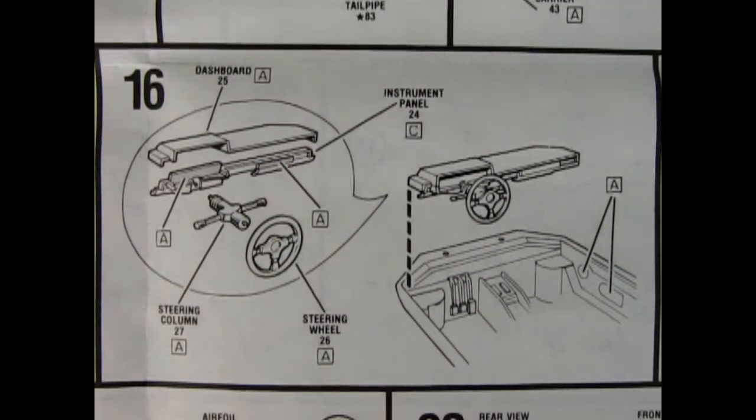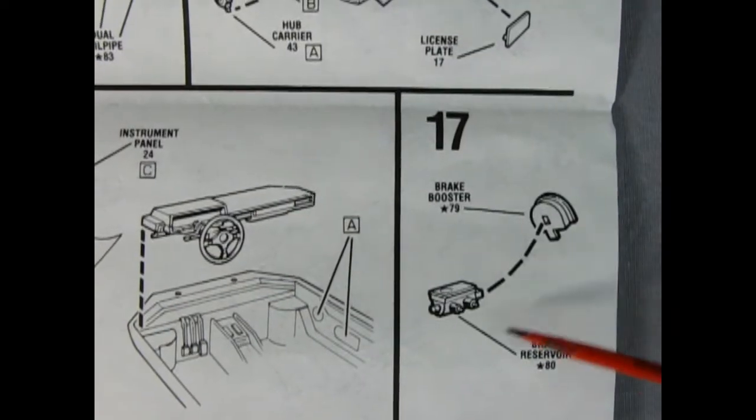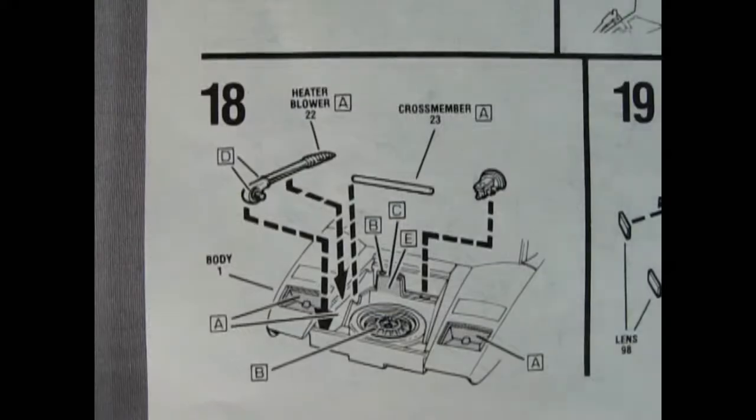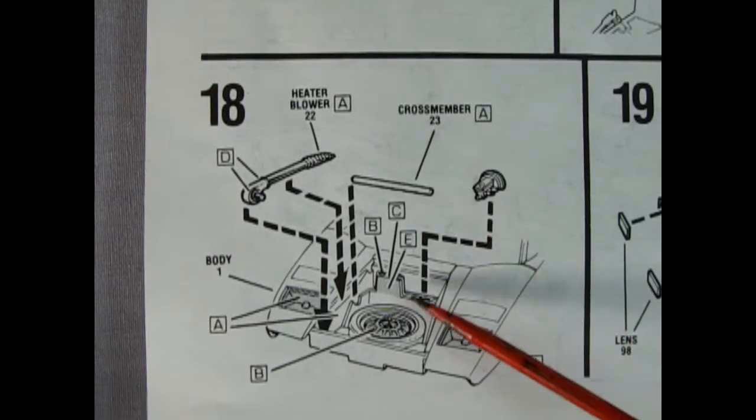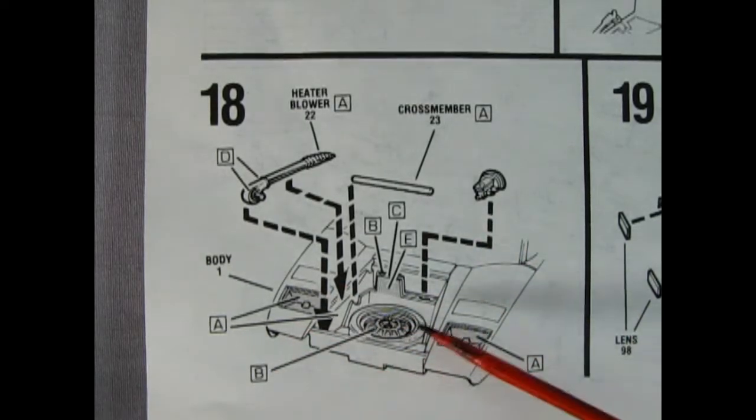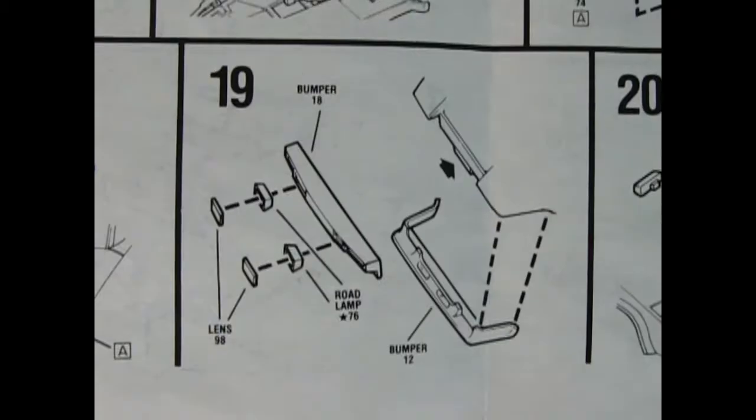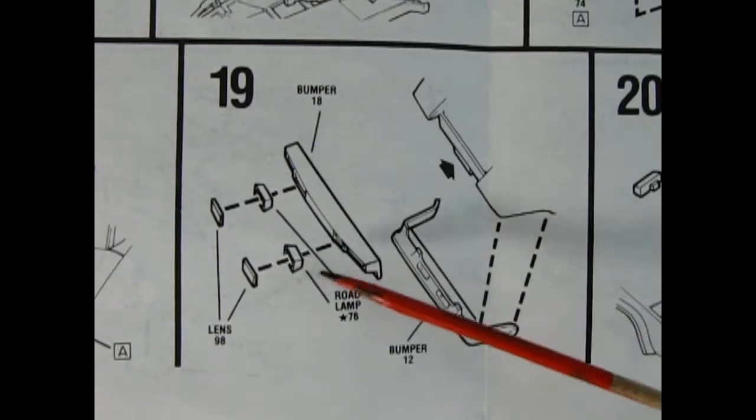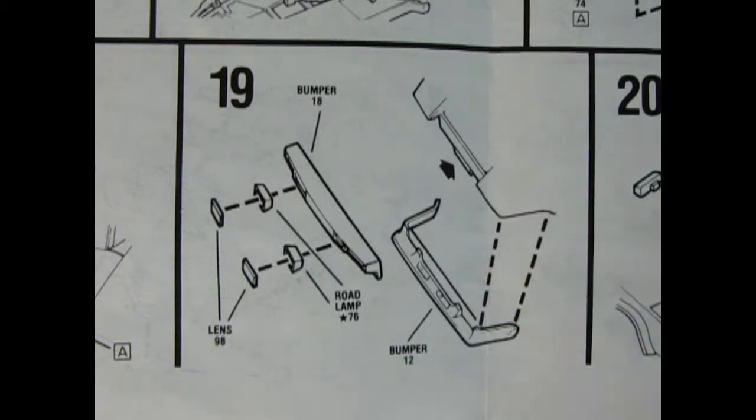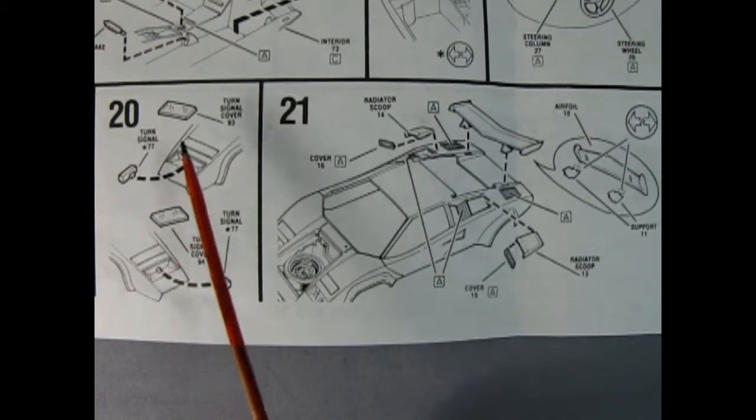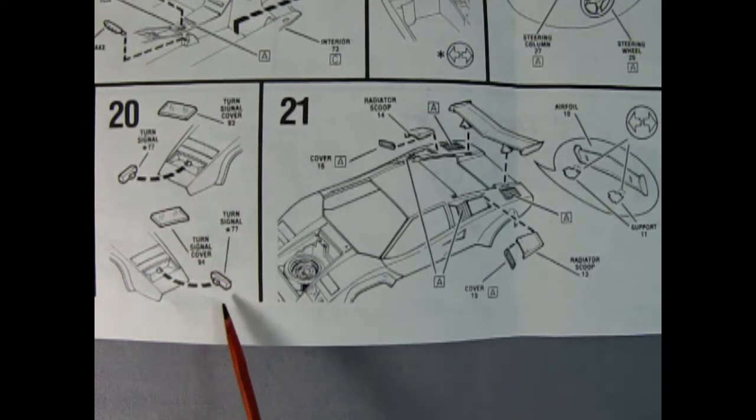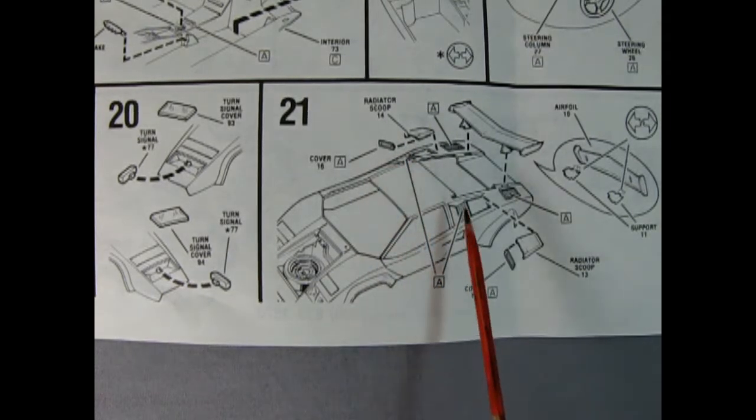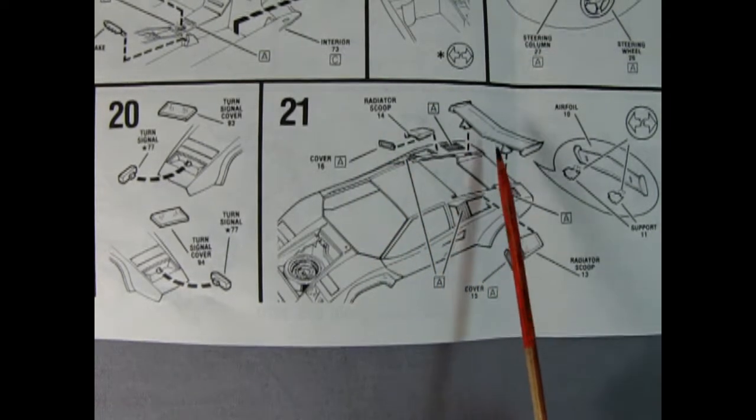Panel 17 shows the two-piece brake booster going together. Panel 18 shows our heater blower, the cross member, and our master cylinder being dropped into the front of the car. Panel 19 shows our bumper with the road lamps and the lenses, and that goes on to the front of the car. In panel 20 we've got our turn signal cover going on top of these chrome plated turn signals. We've got our radiator scoops going on and that nice rear wing dropping in place.